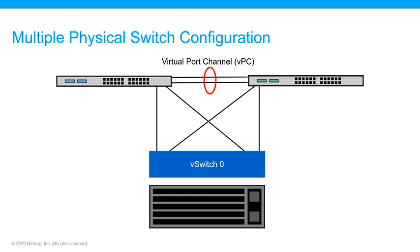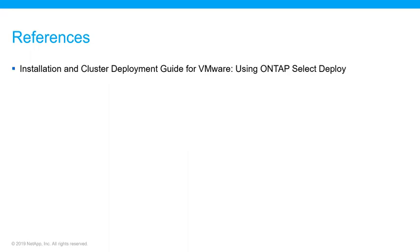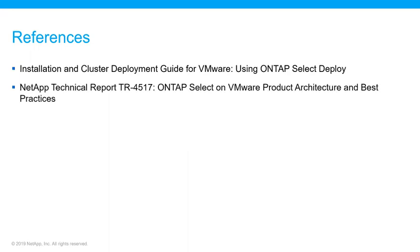If possible, multiple switches should be used to prevent a physical hardware failure from causing a cluster network outage. When redundancy is needed, multiple physical network switches should be used. A recommended configuration is shown being used by one node in a multi-node ONTAP SELECT cluster. Physical NICs are cabled into different physical switches, protecting the user from a single hardware switch failure. A virtual port channel is configured between switches to prevent spanning tree issues. When sufficient hardware is available, NetApp recommends using the multi-switch configuration due to the added protection against physical switch failures. These NetApp references are recommended to help you successfully configure the ONTAP SELECT environment.